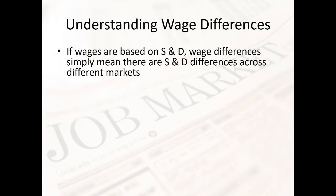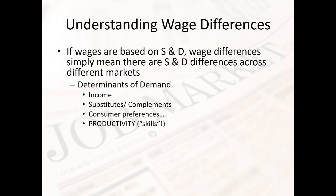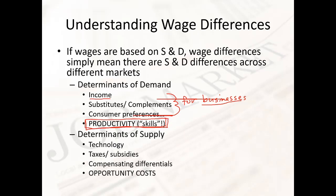Now we can understand wage differences. If wages are based on supply and demand, then wage differences mean there are supply and demand differences across different markets. The determinants of demand include income, substitutes, complements, consumer preferences, and number of consumers — for businesses specifically, that means business income, availability of substitutes for labor, how much labor complements existing capital, and business preferences. But the main factor here is worker productivity. On the supply side, the key issue is opportunity costs for workers. Labor markets are tight when workers have really good opportunities elsewhere, forcing businesses to pay more.